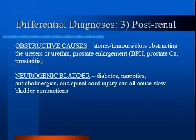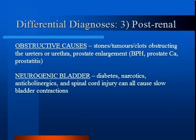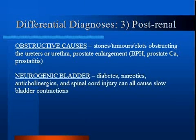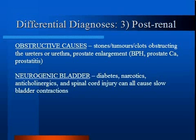Post-renal causes include two main categories. First is obstructive, which causes renal failure by not allowing urine to pass through the site of obstruction, putting pressure upward onto the kidneys — for instance, ureteral blockage due to stones, tumors, or clots, and prostatic obstruction due to prostatitis or BPH. Second is neurogenic bladder, meaning bladder dysfunction due to neurologic damage. Nerve injury or medications that slow bladder function, such as anticholinergics or narcotics, can all cause renal failure.